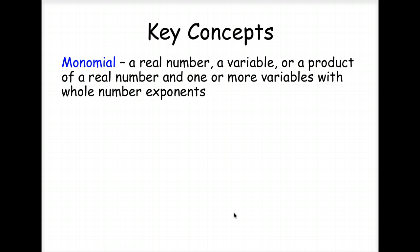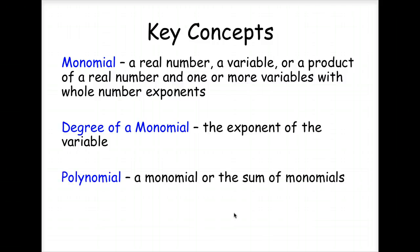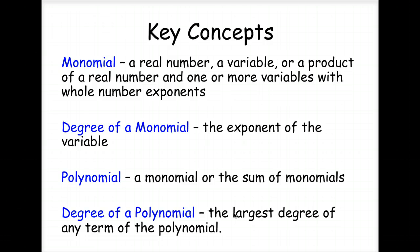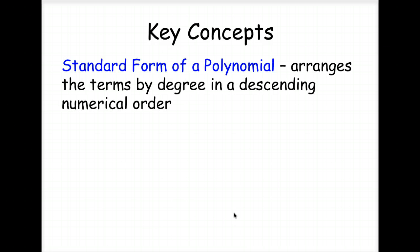Our key concepts for this lesson. A monomial is a real number, a variable, or a product of a real number and one or more variables with whole number exponents. The degree of a monomial is the exponent of the variable. A polynomial is a monomial or the sum of monomials. And the degree of a polynomial is the largest degree of any term of the polynomial. So what in the world does that all mean? We'll look at that here in a little bit.